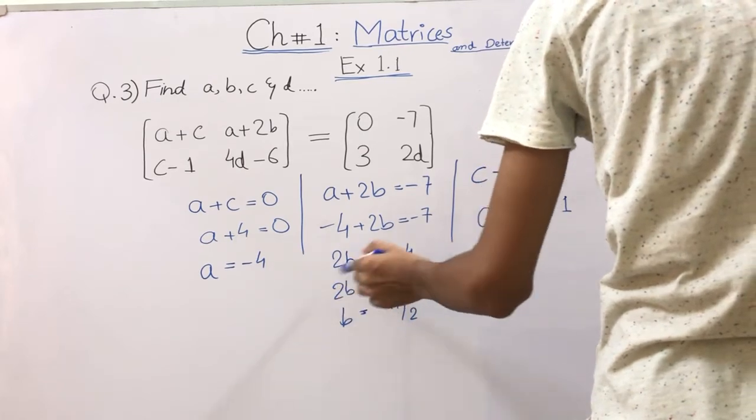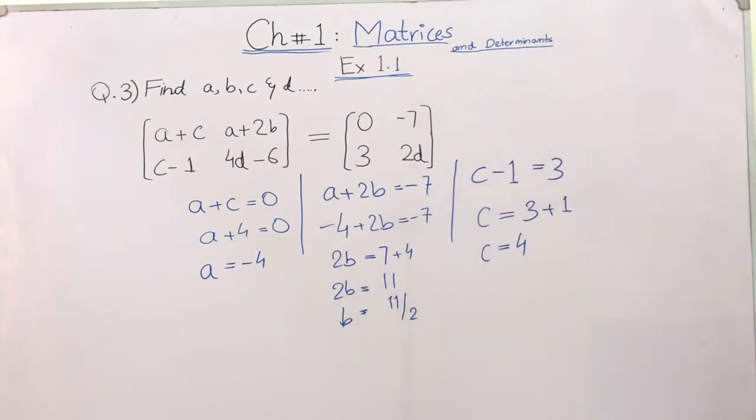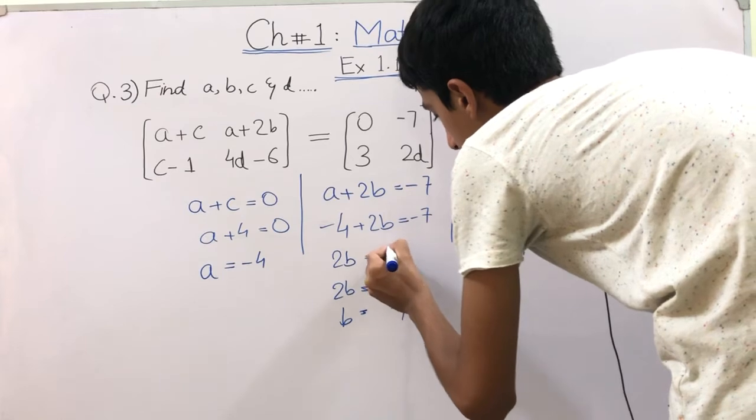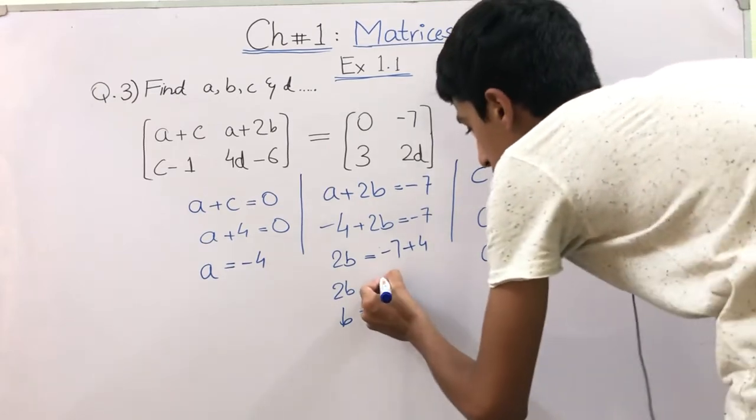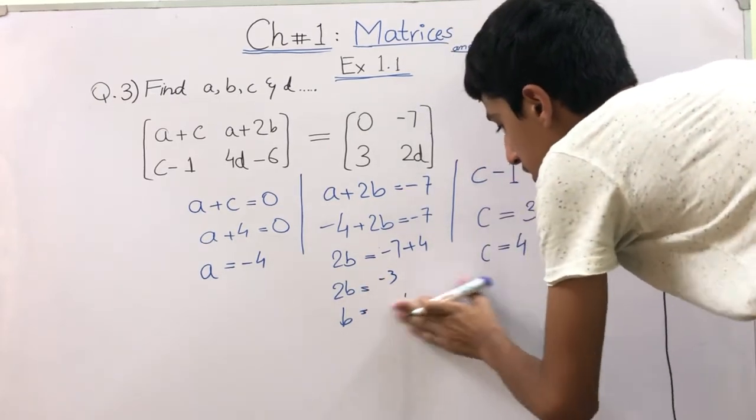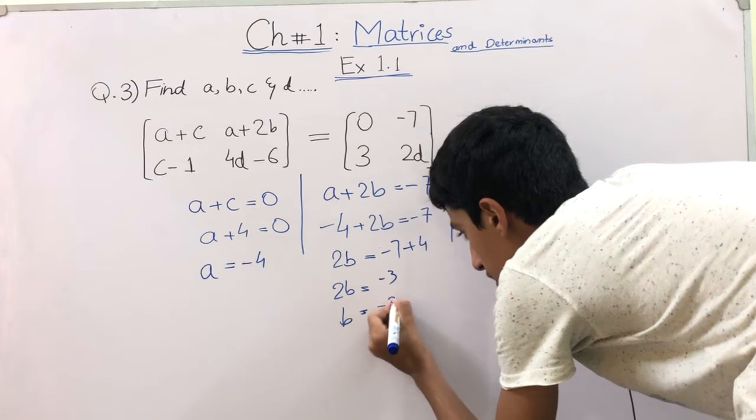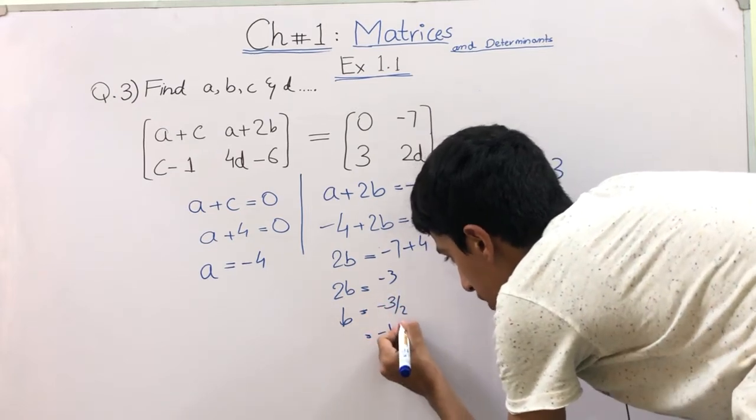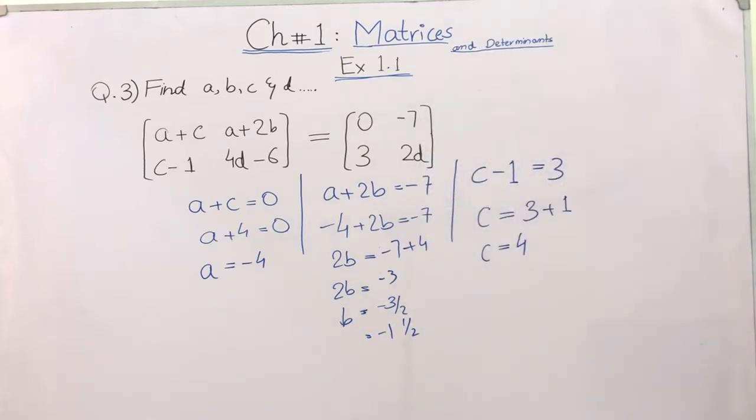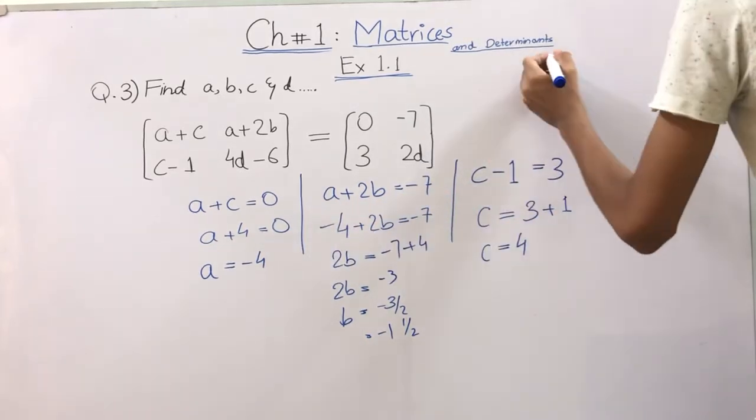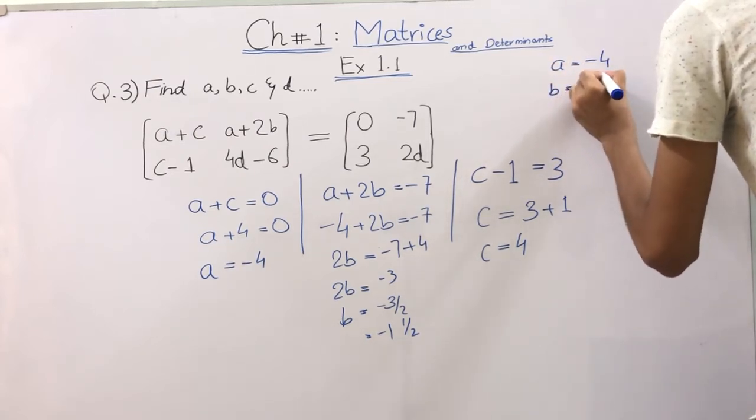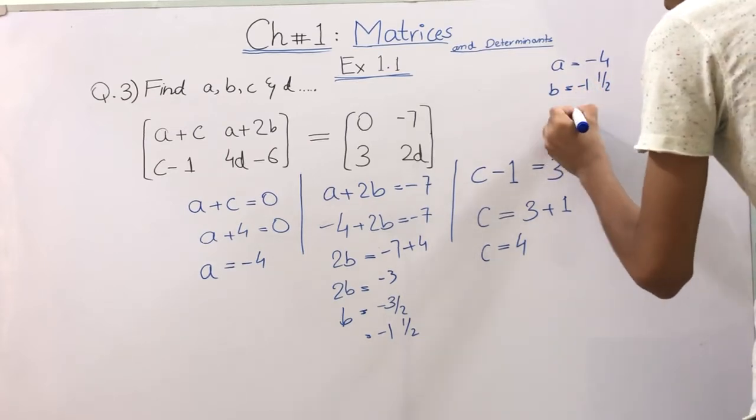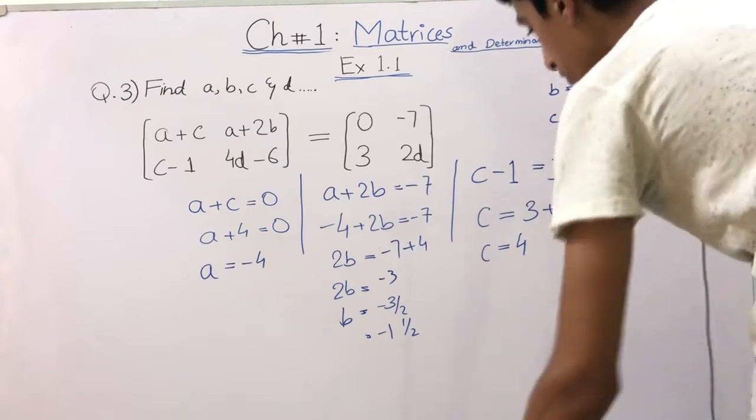Because 2 is multiplying here, if we shift to the opposite side, it will divide there. So we will have minus 3 over 2, which is equal to minus 1 and 1/2. So we have solved three equations: A is equal to minus 4, B is equal to minus 1 whole 1/2, and C is equal to 4.